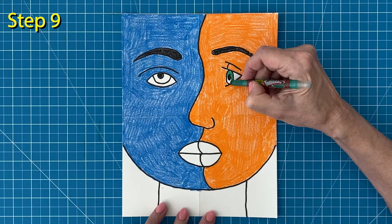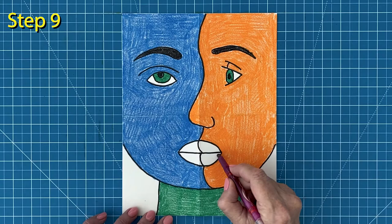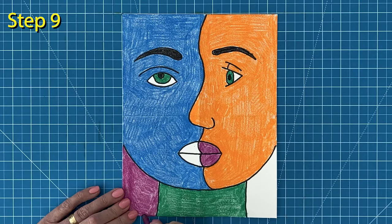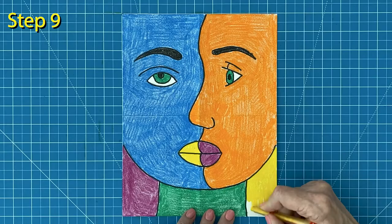Purple lips on the right side will add lots of contrast, as well as a purple background on the left. I'm going to use my yellow the same way, both starting with the lips and then finishing off the right side of the background.